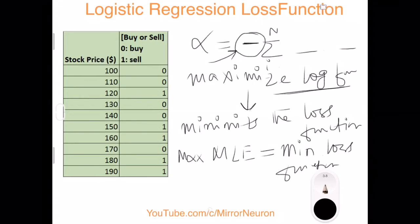To summarize: we went from OLS or a linear model to logistic regression by introducing two key concepts — the sigmoid function and the Bernoulli distribution. Using these two techniques, we converted a linear model into a logistic regression model so that we can handle classification problems in addition to regression. Fortunately, we don't have to implement all this math ourselves because scikit-learn has done it for us, and we only need two lines of code — which we will see in the upcoming Python code section. Thanks for watching, and please subscribe to support us!